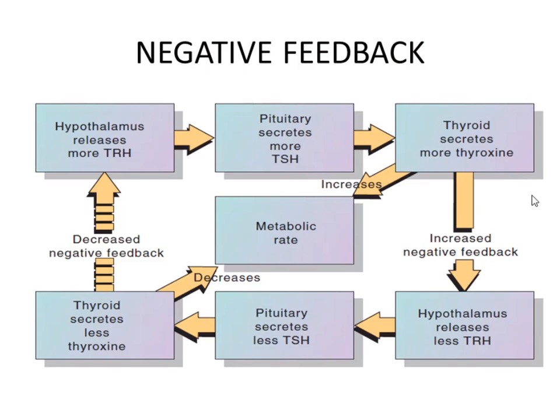Looking at the diagram as an example of negative feedback: the hypothalamus releases TRH, which stimulates the pituitary gland to release thyroid stimulating hormone (TSH). TSH causes the thyroid gland to secrete more thyroxin. Thyroxin increases the metabolic rate, but then causes the hypothalamus to release less TRH, which in turn causes the pituitary to secrete less TSH, and the thyroid gland to secrete less thyroxin, decreasing the metabolic rate.